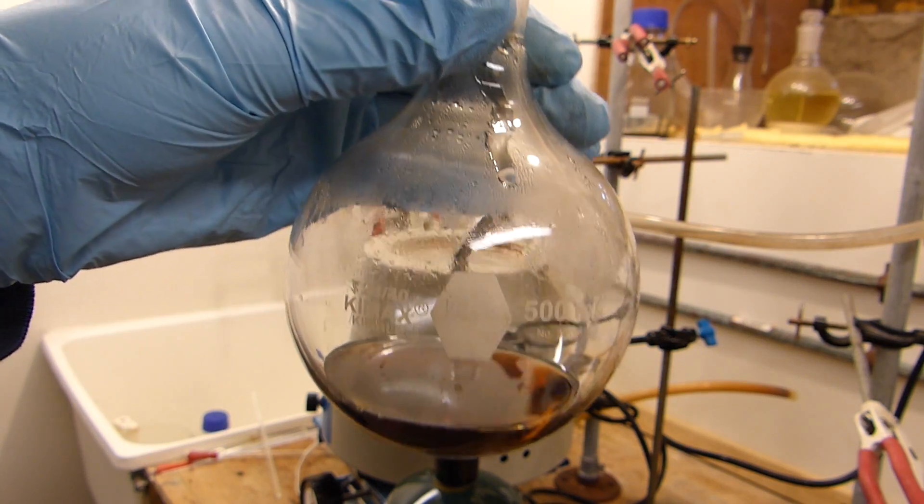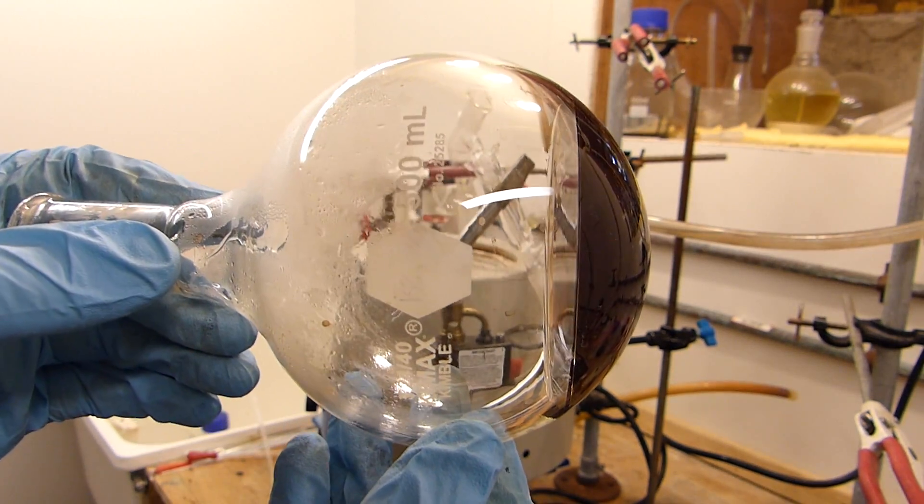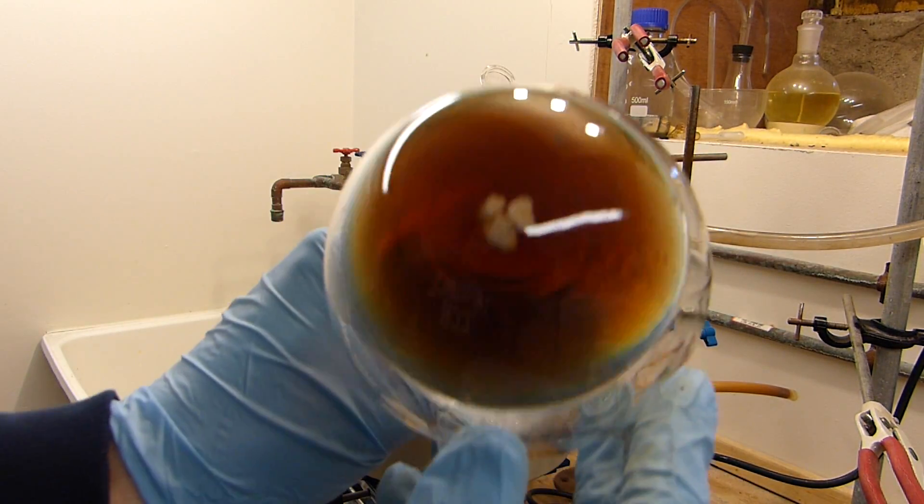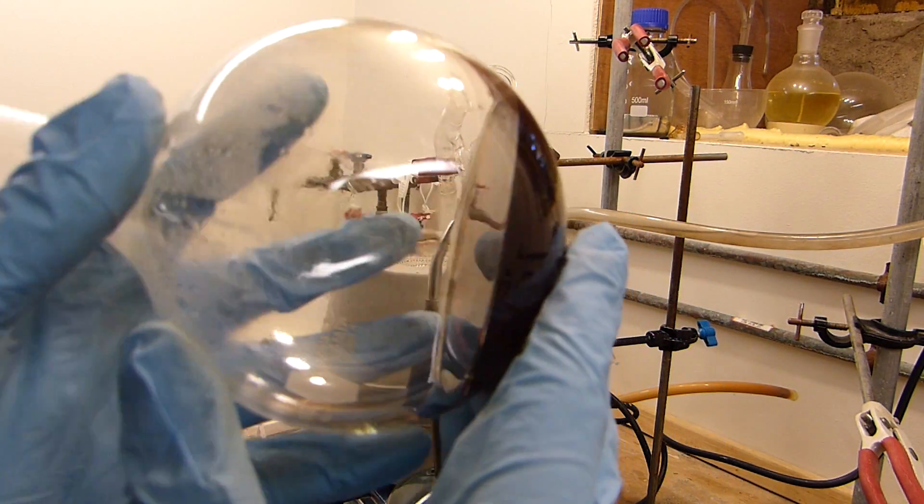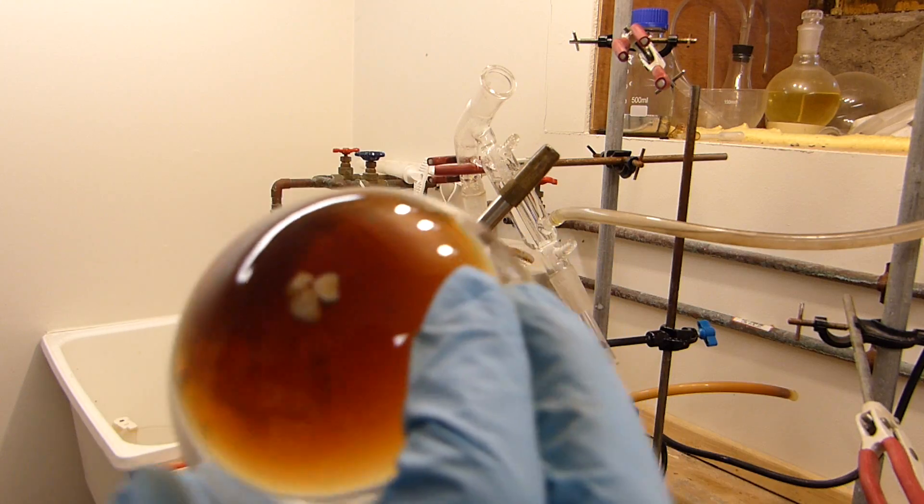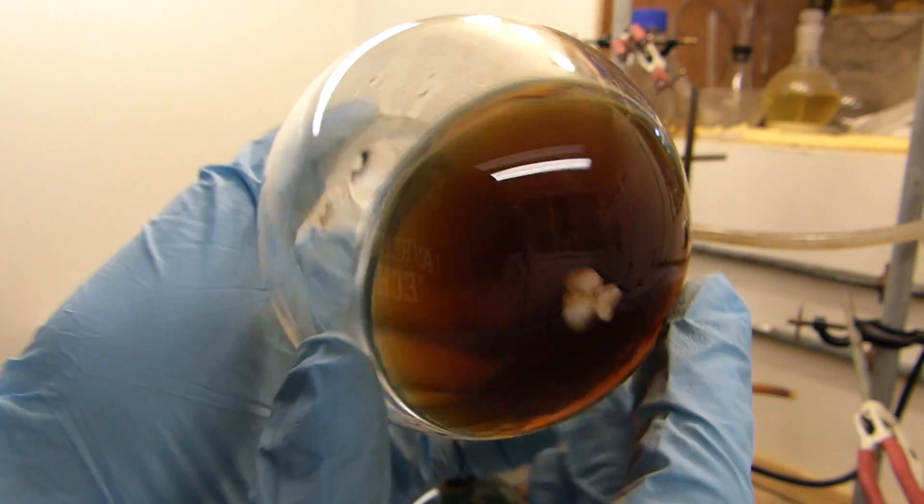You can see that the byproducts that were left in the flask are quite viscous and it's sort of a clear hard liquid and that's probably phenyl salicylate. It's still a little warm, but I should probably see if I can get that out and use it for something.